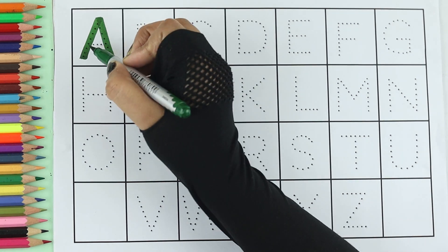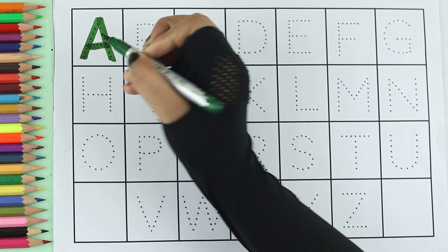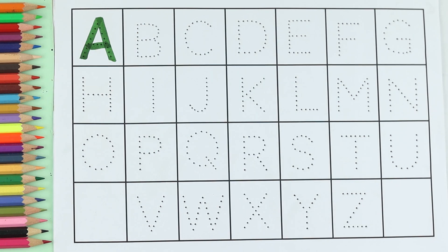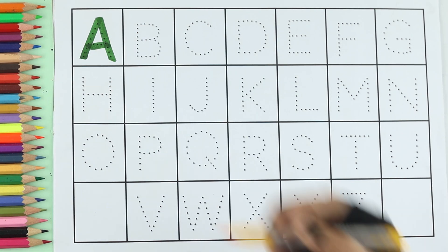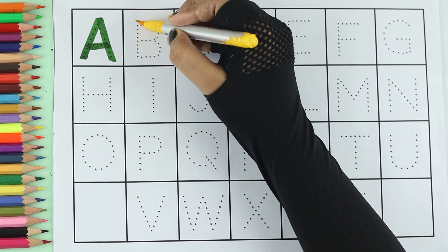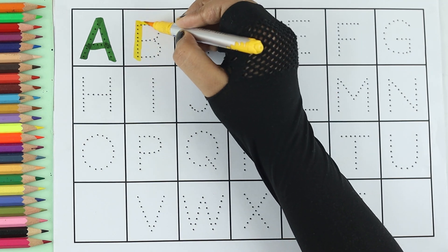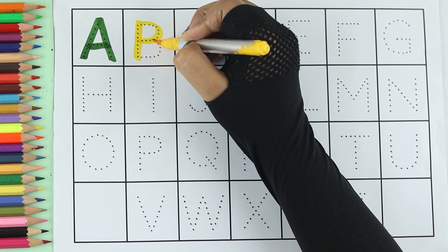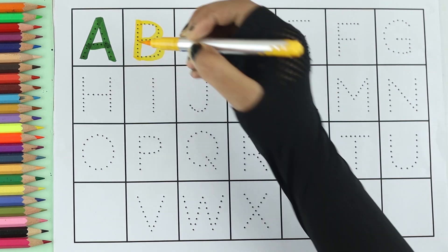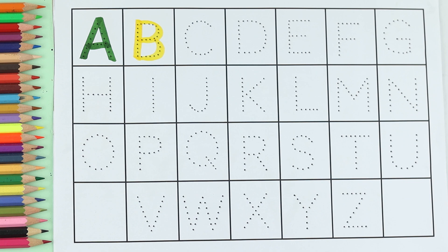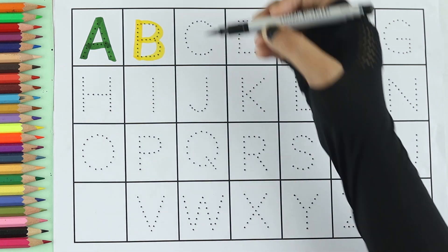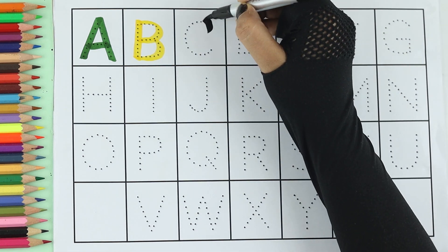A, A for apple. A for apple. Yellow color. B, B for ball. B for ball. Black color.